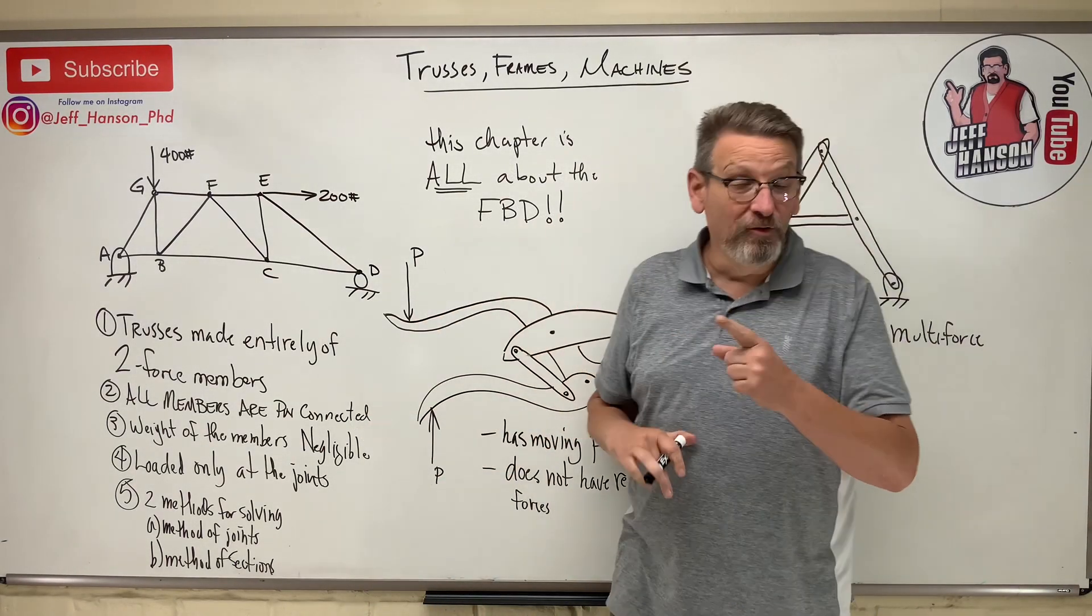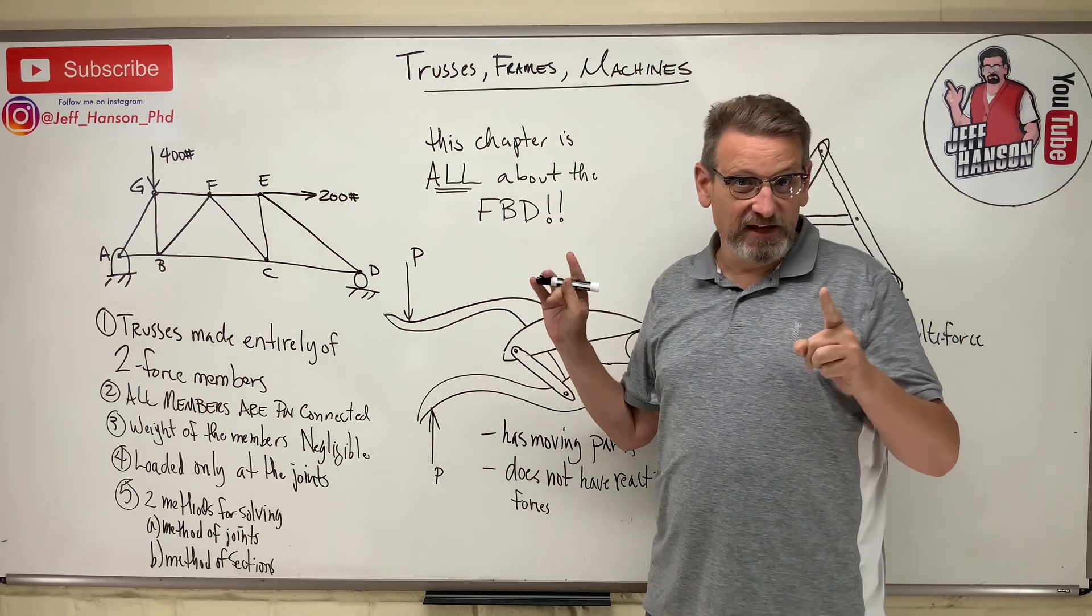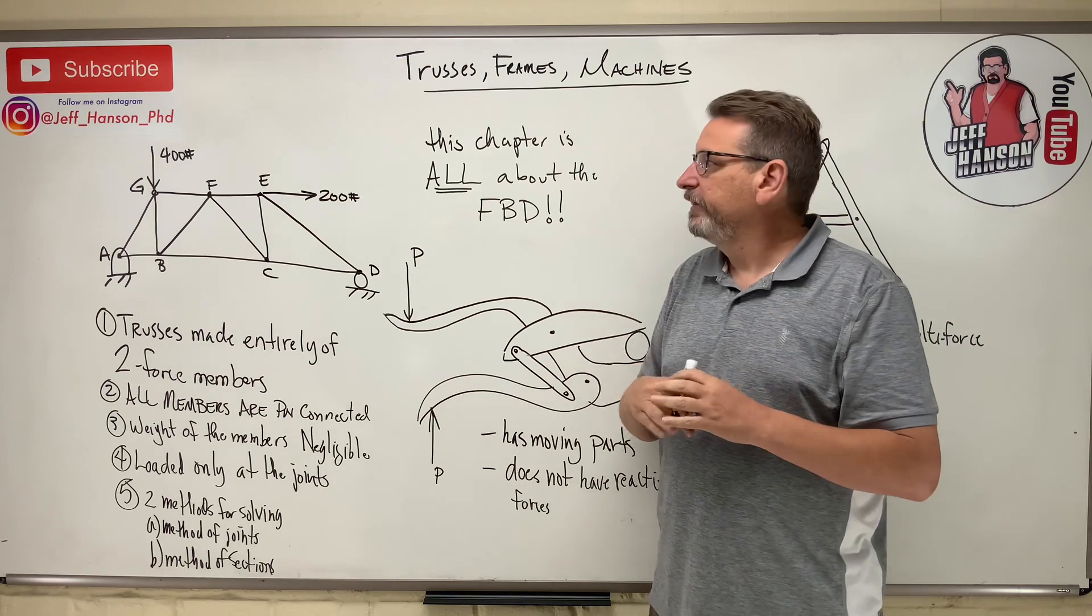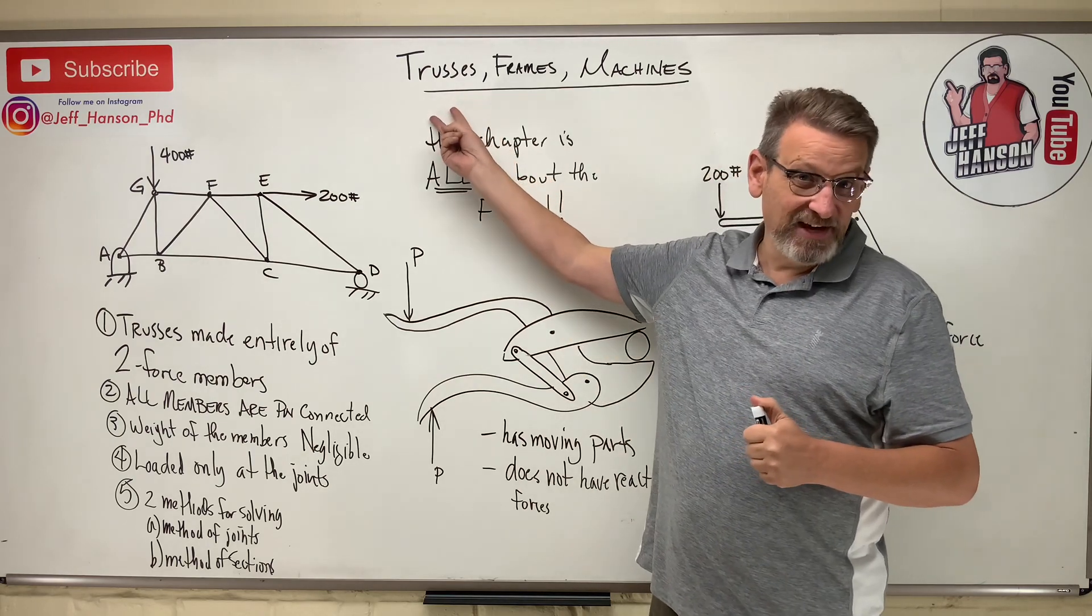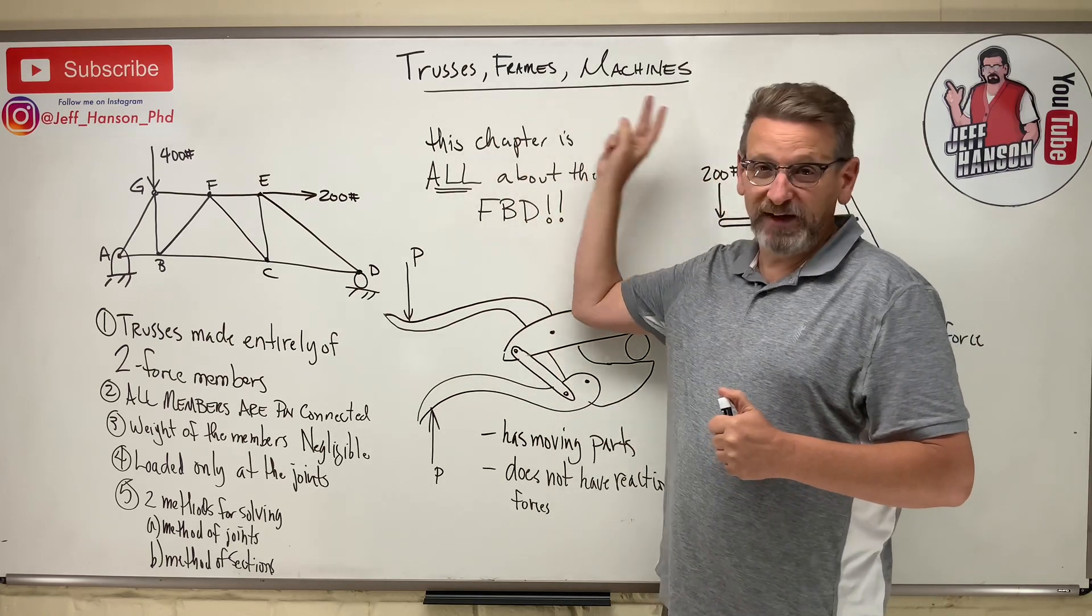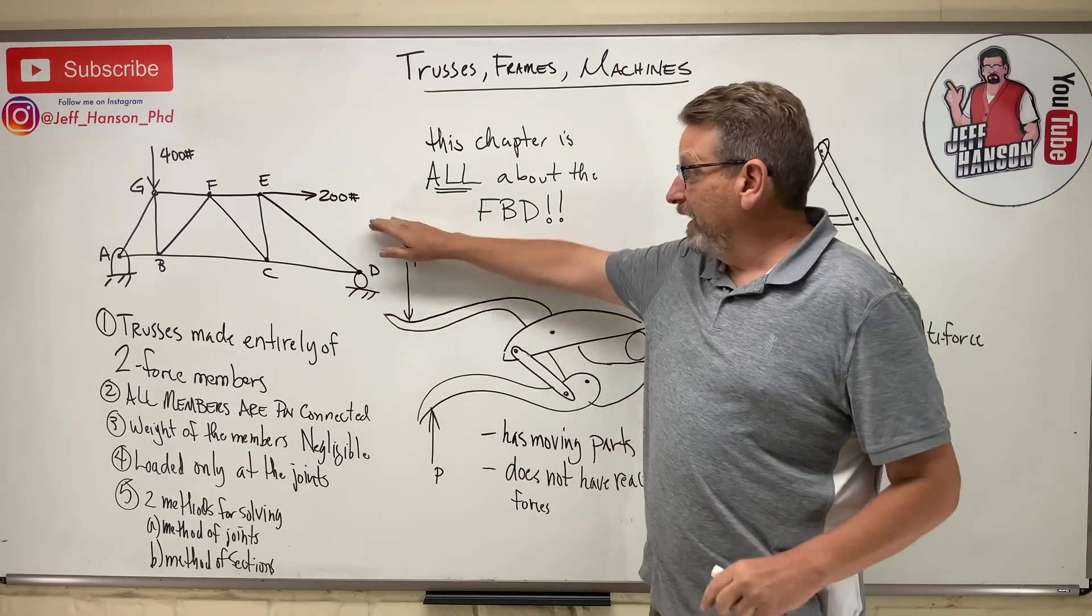Alright gang, we're moving on to the next chapter. It's Chapter 6 in the Hibbler book, and I think it's Chapter 6 in the other book too, the Baron Johnson or whatever book you're studying. You're gonna have a chapter on trusses, frames, and machines. You can trust me on this one.